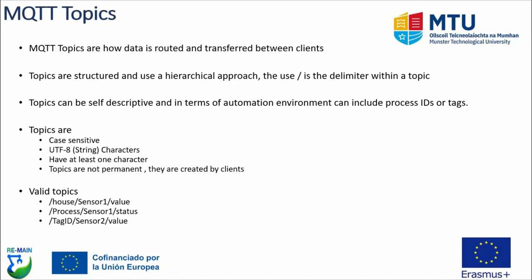Topics are not permanent — they are created by clients and unless a client specifies otherwise they will be removed from the broker when no clients are connected using that topic. You can see some examples here: house/sensor-one/value, process/sensor-one/status, tag-ID/sensor-two/value. Notice the delimiter between various levels of the topics. For a process with three sensors, the first naming in the topic could be the process itself — a cleaning process or sorting line — with sensor names and categories separated by delimiters down to sensor values and statuses.